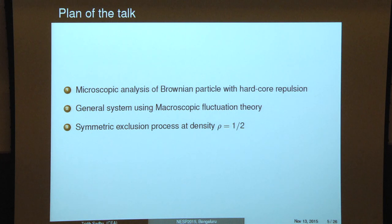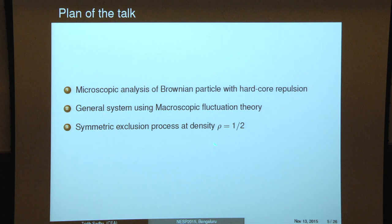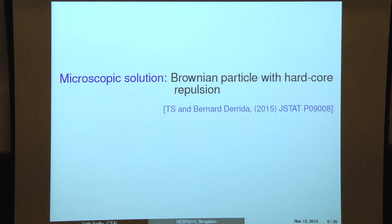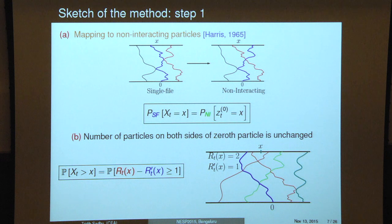In the rest of the talk, I will explain how we derive these results. There will be two different approaches. One is the microscopic analysis for Brownian point particles with hardcore repulsion. In the second, I'll derive all these results in a hydrodynamic way, which applies to a much more general class of single-file diffusion problems. At the end, if there is time, I'll talk about calculating the tagged particle statistics for the symmetric exclusion process at a particular density, rho equal to half.